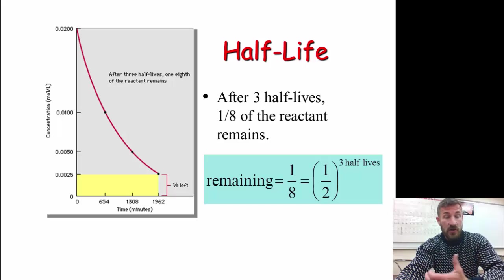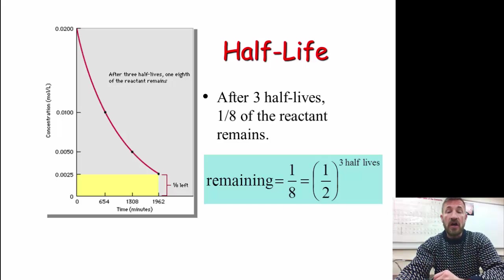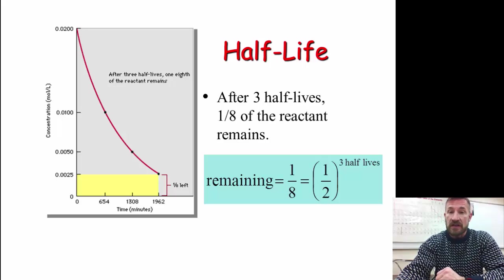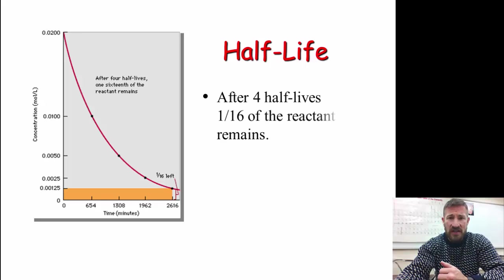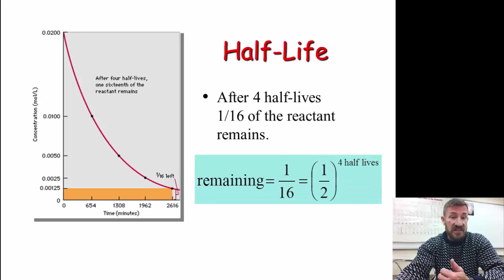So one-half to the third power would be the amount that would be remaining. So if you took your initial mass or initial concentration, multiplied that by one-eighth, or one-half to the third, you would get the amount you have after three half-lives. But you could do it again for another half-life, which four half-lives would be one-sixteenth. And so one-sixteenth times initial mass or the initial concentration would give you the number remaining after four half-lives.